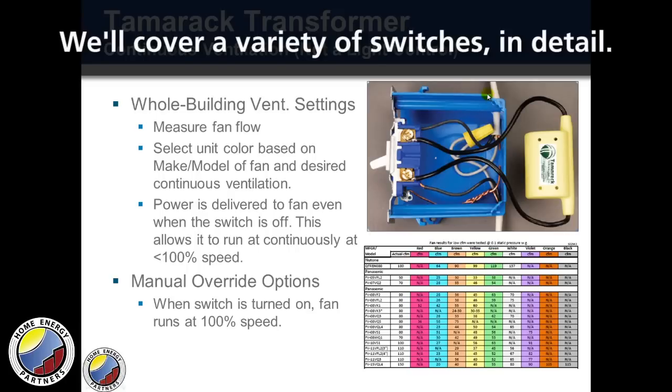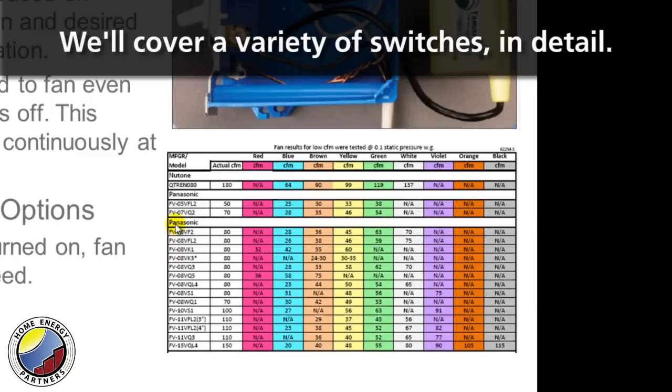They have a series of charts here that is broken down by the make and model of fan. So let's say that you were going to use this fan right here, the FV08VQ3. The actual CFM is 80, and maybe for your building you only needed 30 CFM of continuous ventilation.